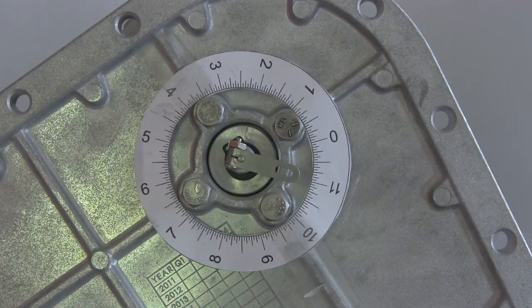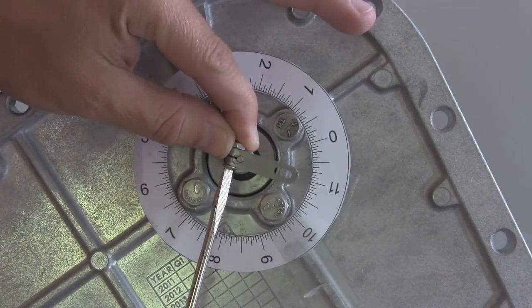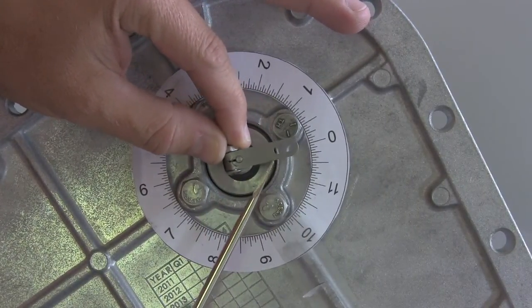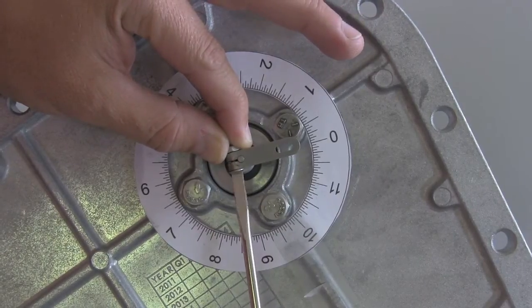When we do this, the coupling now does not align with zero on the printed dial. So what we have to do is loosen the screw on the coupling and turn it so that it aligns with the zero on the printed dial and then retighten the screw.